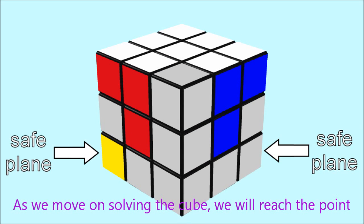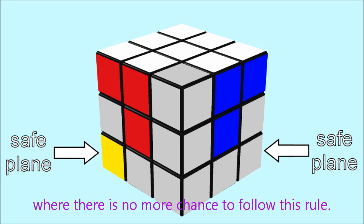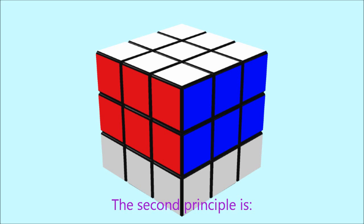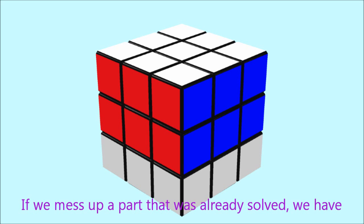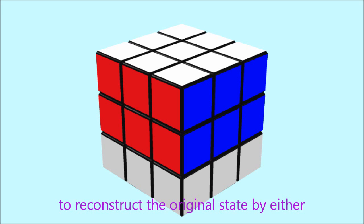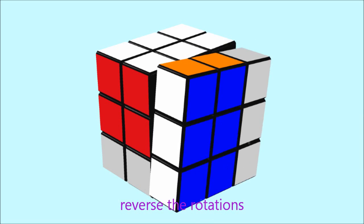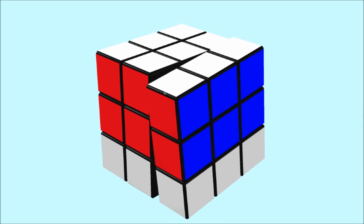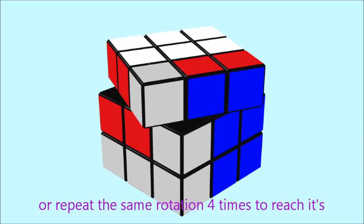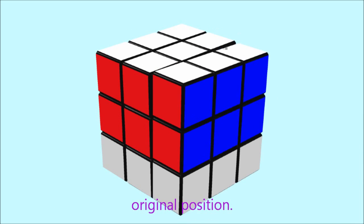As we move on solving the cube, we will reach the point where there is no more chance to follow this rule. The second principle is, if we messed up a part that was already solved, we have to reconstruct the original state by either reversal rotations or repeat the same rotation four times to reach its original position.